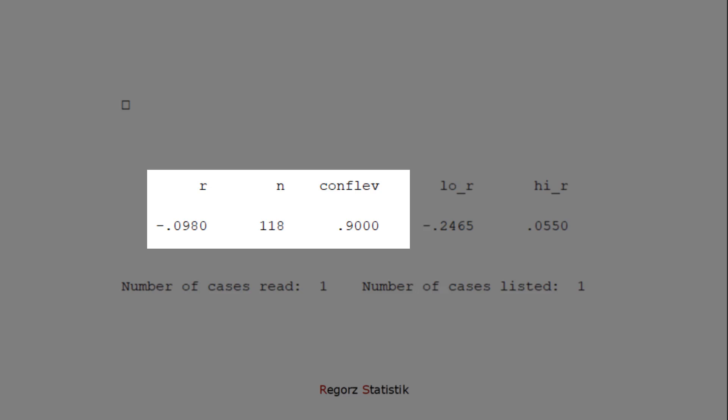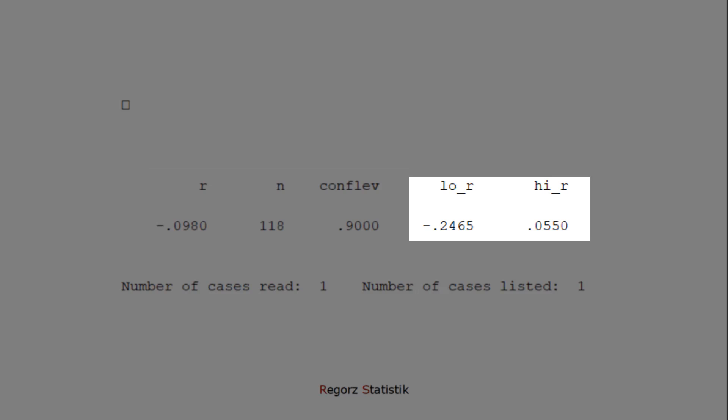And this is the output I would be getting with my data example. Here are the three numbers we have put in. The correlation, the sample size, and the confidence level. And here the result. The lower limit of the confidence interval for the correlation. And the upper limit for the confidence interval.